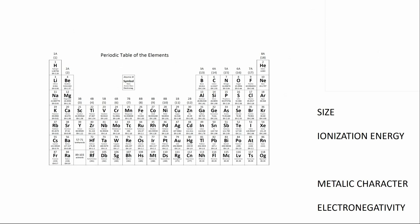The first is size. The smallest atom in the periodic table is helium, and the largest will be francium. Size will increase as we go from right to left and from top to bottom.